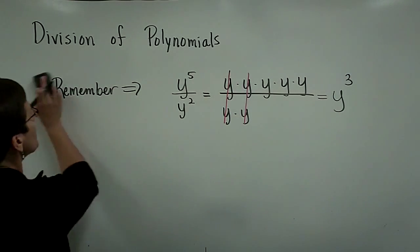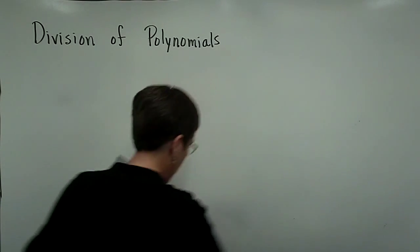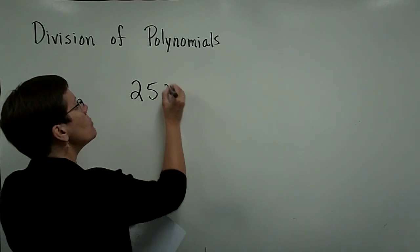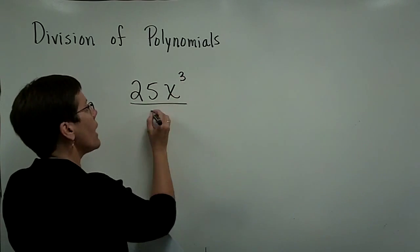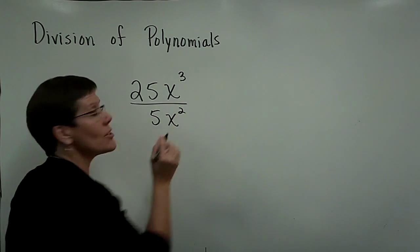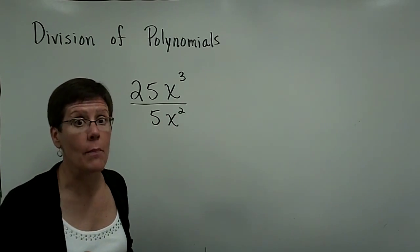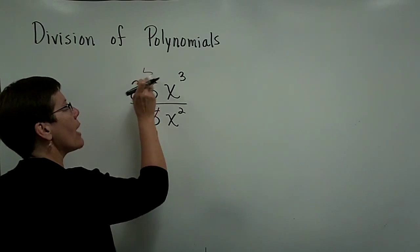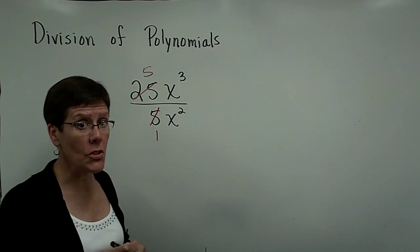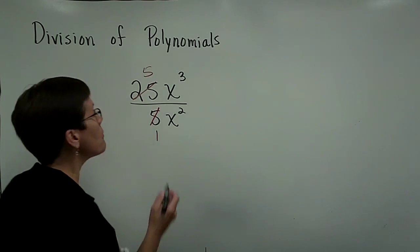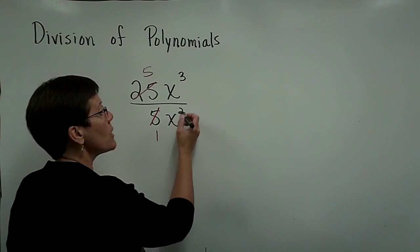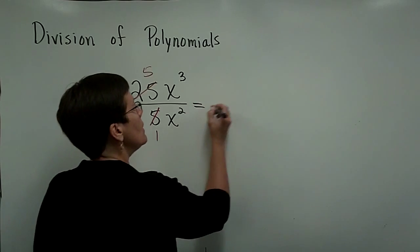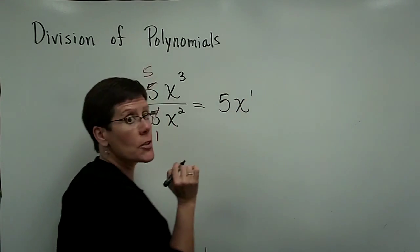So when I take a monomial and divide it by a monomial, the variable factors within that, I will subtract their exponents. But their numerical coefficients, the 25 and the 5 here, are just like regular fractions, and you would just reduce them if you can. So you would say 5 divides into here once, and 5 divides into there 5 times. So the coefficient in your answer will be 5. But this x to the third divided by x to the second is x to the first, because you subtract those exponents. So my final answer for this is 5x to the first.